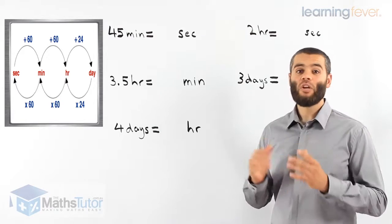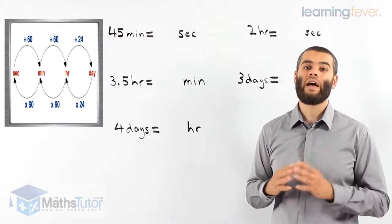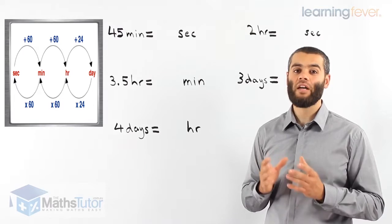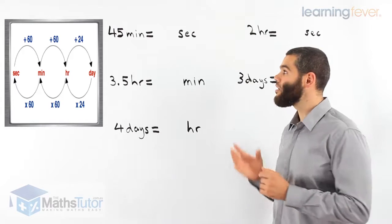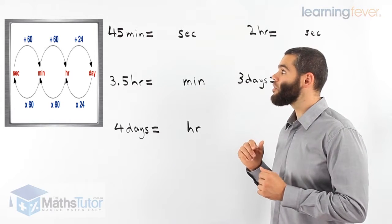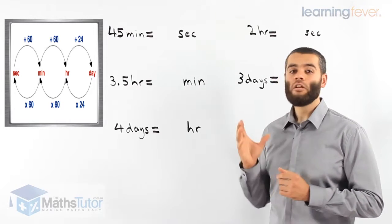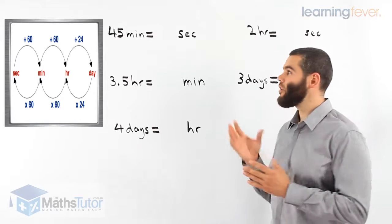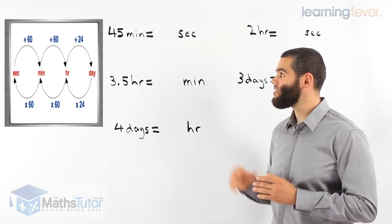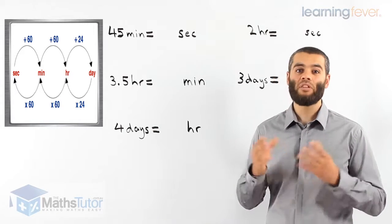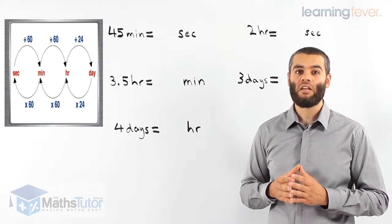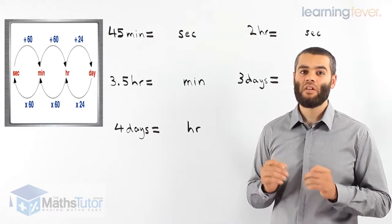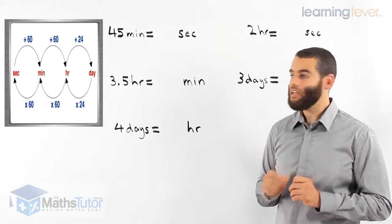If we're going from days back to hours, the opposite of divide is times. So to go from a day to an hour, we times by 24. If we're going from hours to minutes, we times by 60. And if we're going from minutes to seconds, we times by 60.